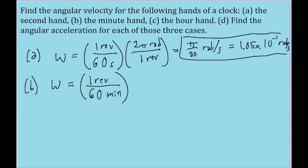So to keep things consistent, I'm going to convert from minutes to seconds. So that's one minute every 60 seconds. And then I'm going to do the exact same conversion from revolutions to radians. It's 2 pi radians, and that's equal to 1 revolution.